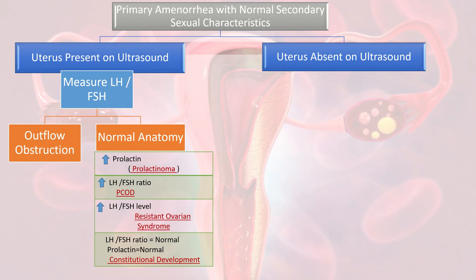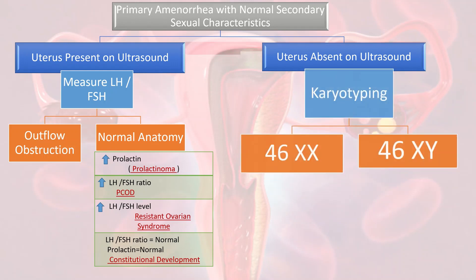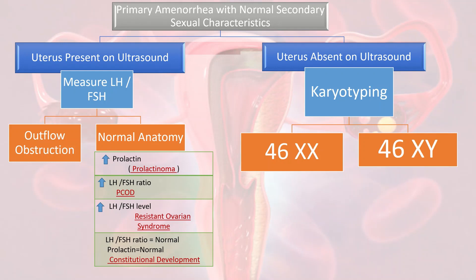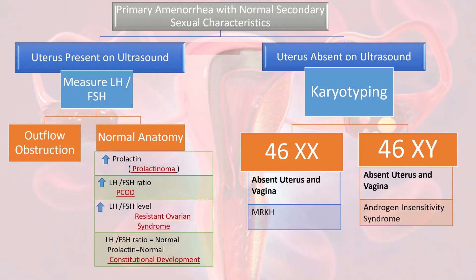When LH and FSH levels are high, that indicates resistant ovarian syndrome. When LH-FSH ratio and prolactin are both normal, that indicates constitutional delay. In the group where the uterus is absent on ultrasound, we do karyotyping. A karyotype of 46XX with absent uterus and vagina indicates MRKH, while a karyotype of 46XY with absent uterus and vagina indicates androgen insensitivity syndrome.